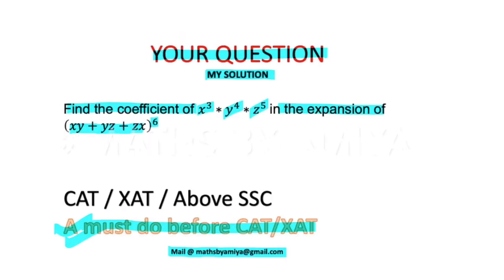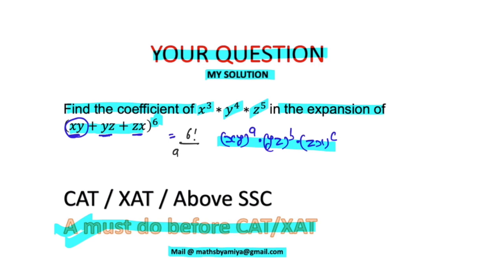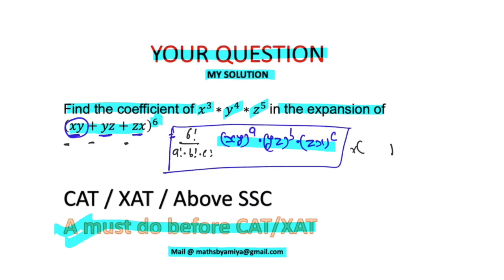Now for the main question. We treat each product as a single term: (xy)^a, (yz)^b, (zx)^c. The general term with power distribution is 6! / (a! · b! · c!), and since all coefficients are 1, no coefficient distribution is needed. Expanding the powers: x appears in (xy)^a and (zx)^c, so x has power a + c. Similarly, y has power a + b, and z has power b + c. The mother condition is a + b + c = 6.